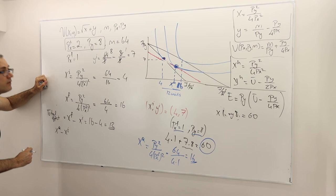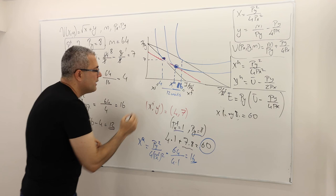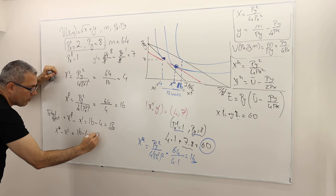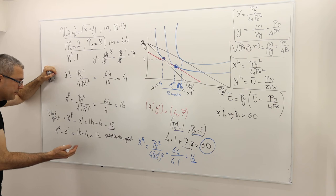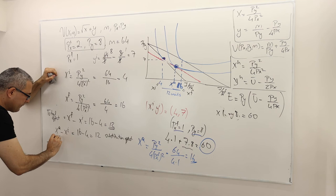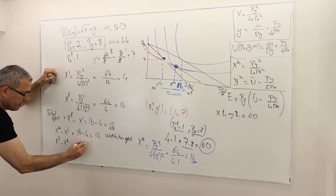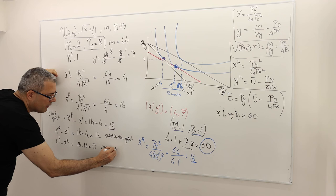XA minus X_initial = 16 minus 4 = 12. This is the substitution effect — meaning the entire total effect is nothing but the substitution effect. The income effect, which is X_final minus XA, is 16 minus 16 = 0. So the income effect is zero.